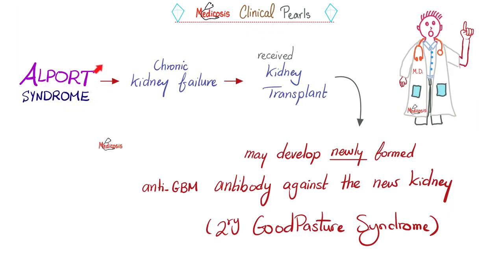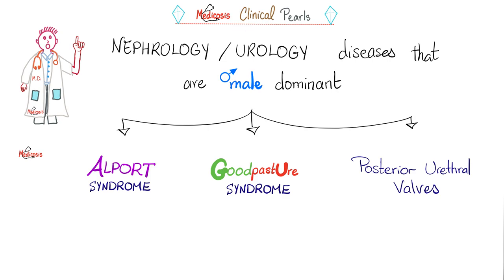Clinical pearls: Alport syndrome is a nephritic syndrome causing chronic kidney failure. These patients may receive a kidney transplant, after which they might develop newly formed antibodies against the glomerular basement membrane of the new kidney — this is secondary Goodpasture syndrome. Another pearl: nephrology/urology diseases that are male-dominant include Alport syndrome, Goodpasture syndrome, and posterior urethral valves — one of the most common causes of reflux, hydronephrosis, and kidney failure in children.